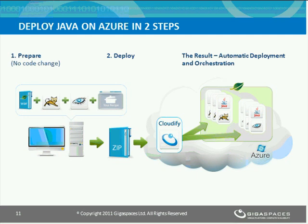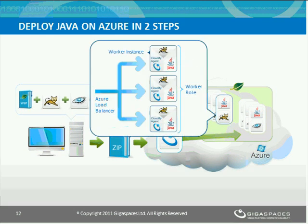The end result, if we zoom into the web container, would look like this: a few instances of worker roles up and running. Within each worker role, we have an agent. Each agent manages a Tomcat server, and all of them are connected to a single endpoint — the Azure load balancer.